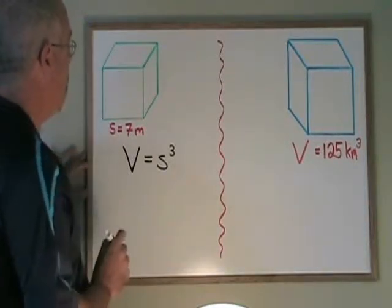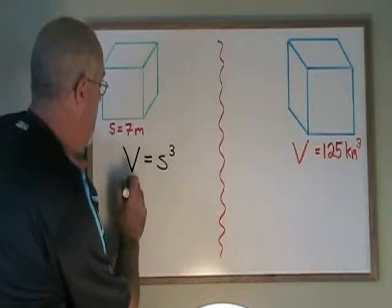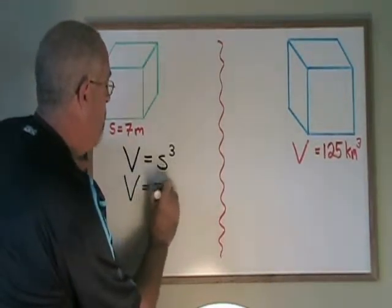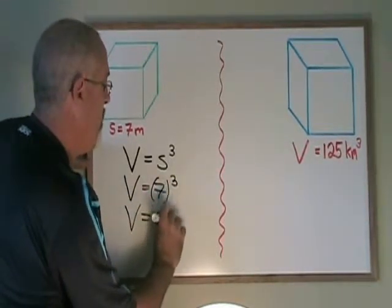In this example, the side length of this cube is 7 meters. So we will plug this into the formula. V is equal to 7 cubed and the cube of 7 is 343.